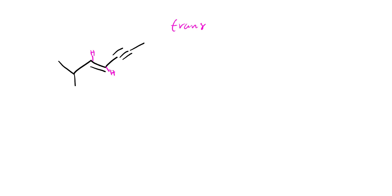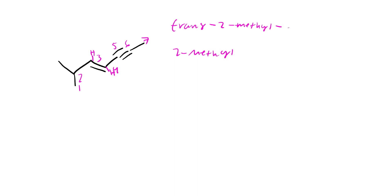Where do we typically start naming? In this case, we are going to start naming at the double bond. So I start here: 2, 3, 4, 5, 6, and 7 - so that is seven. There's a double bond at 3, and a methyl group at 2, so that's 2-methyl. There's also a triple bond at 5.